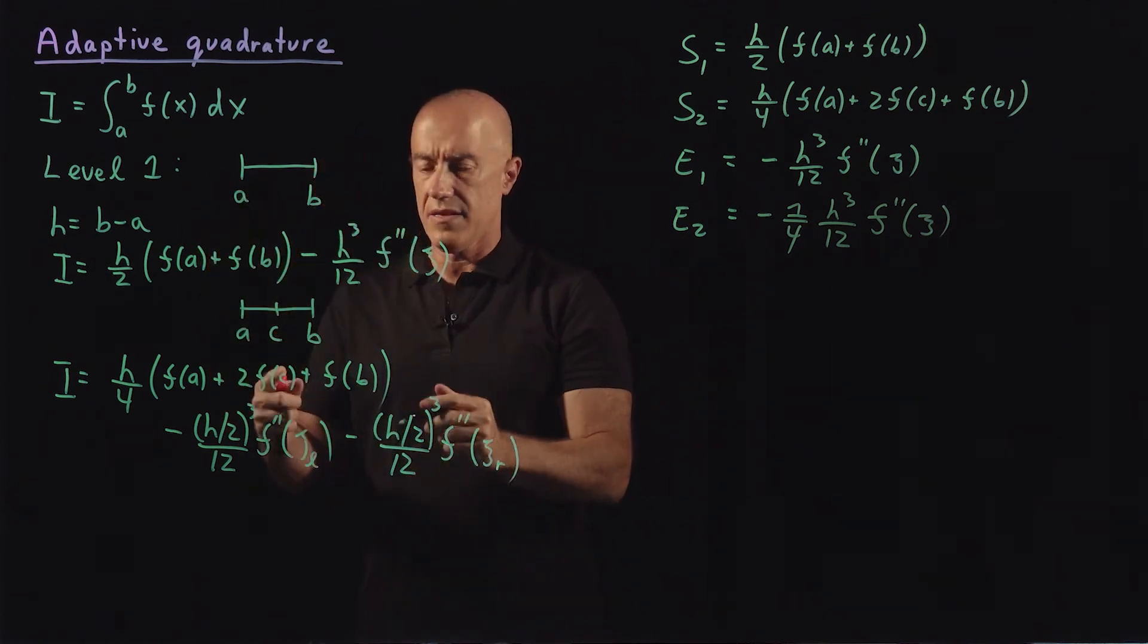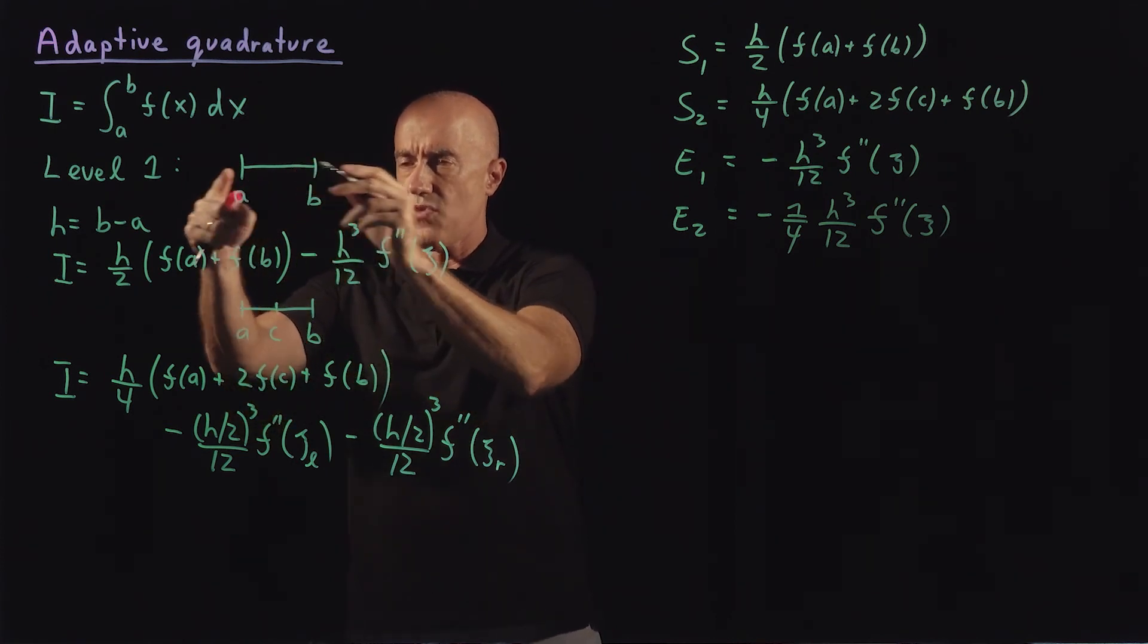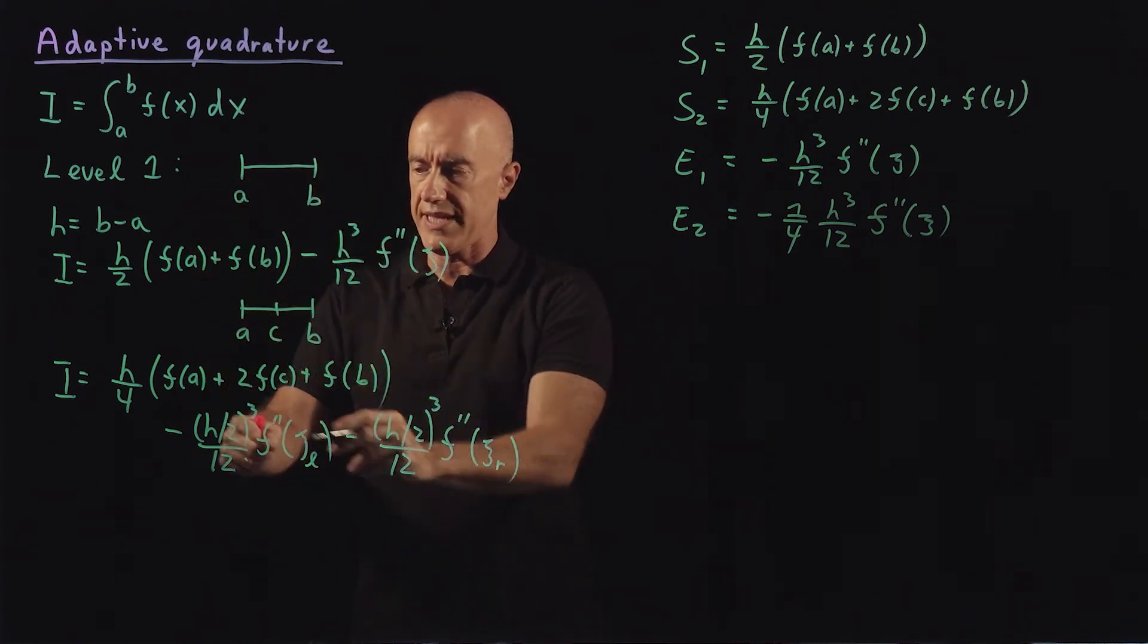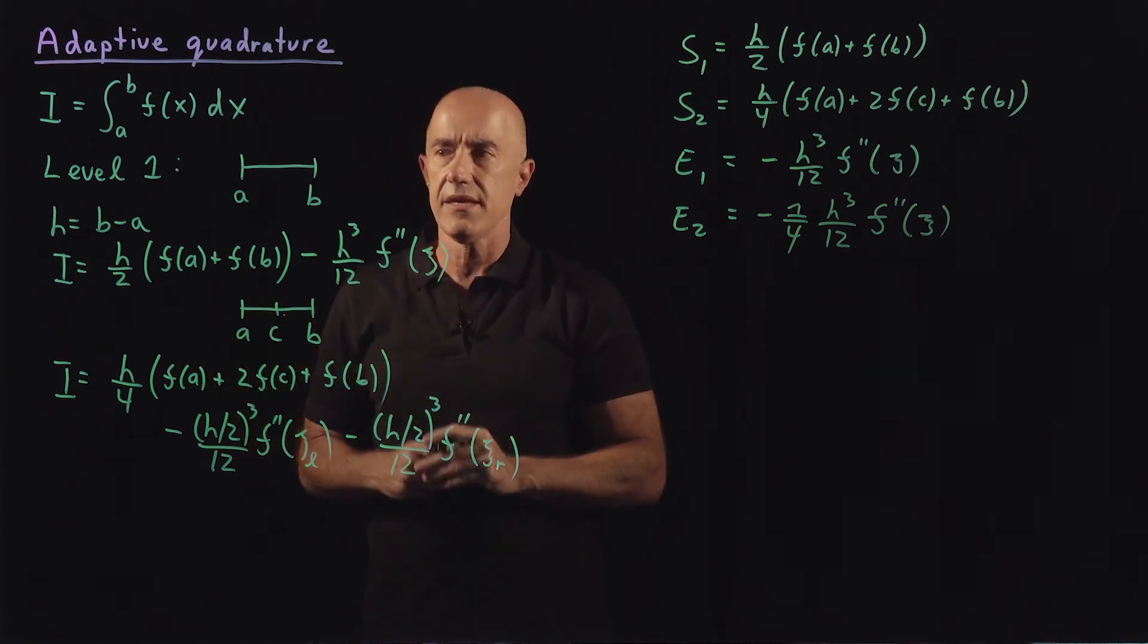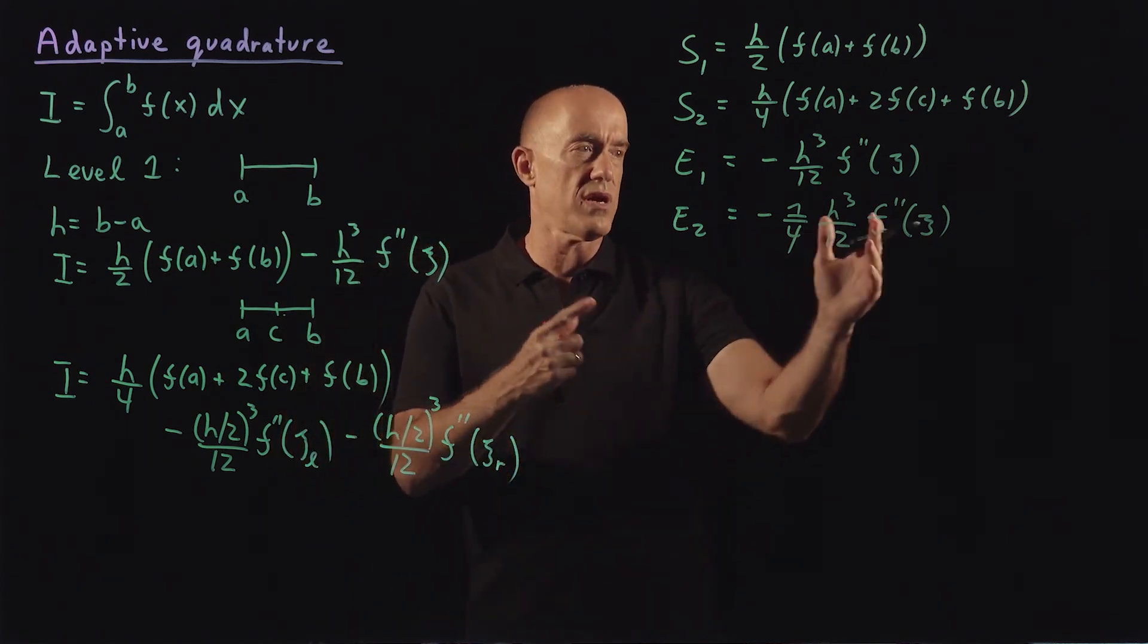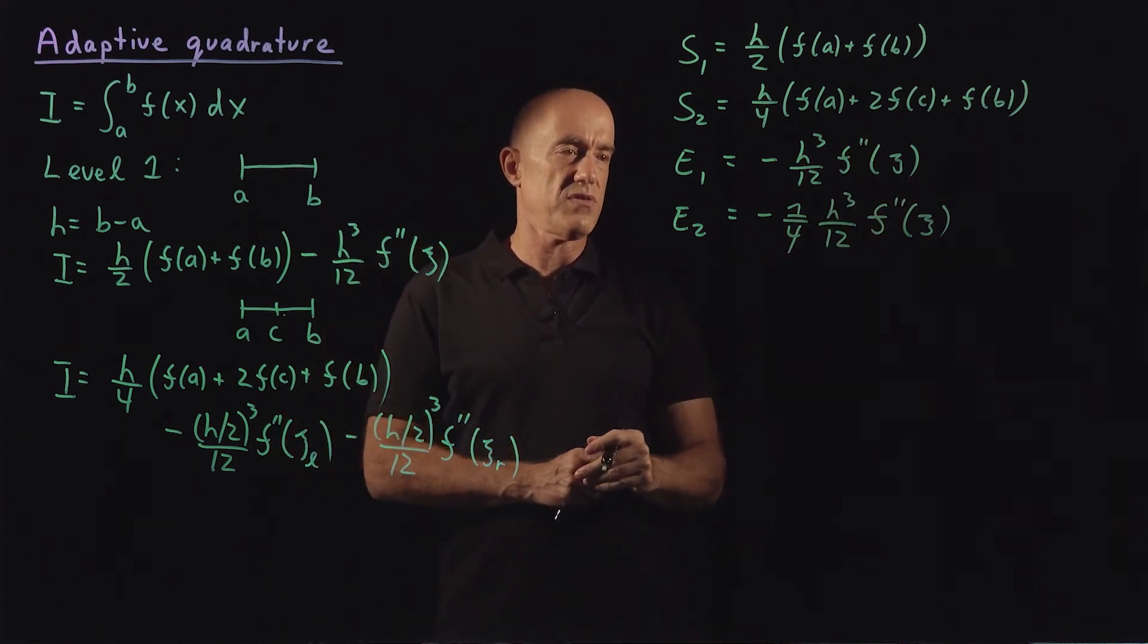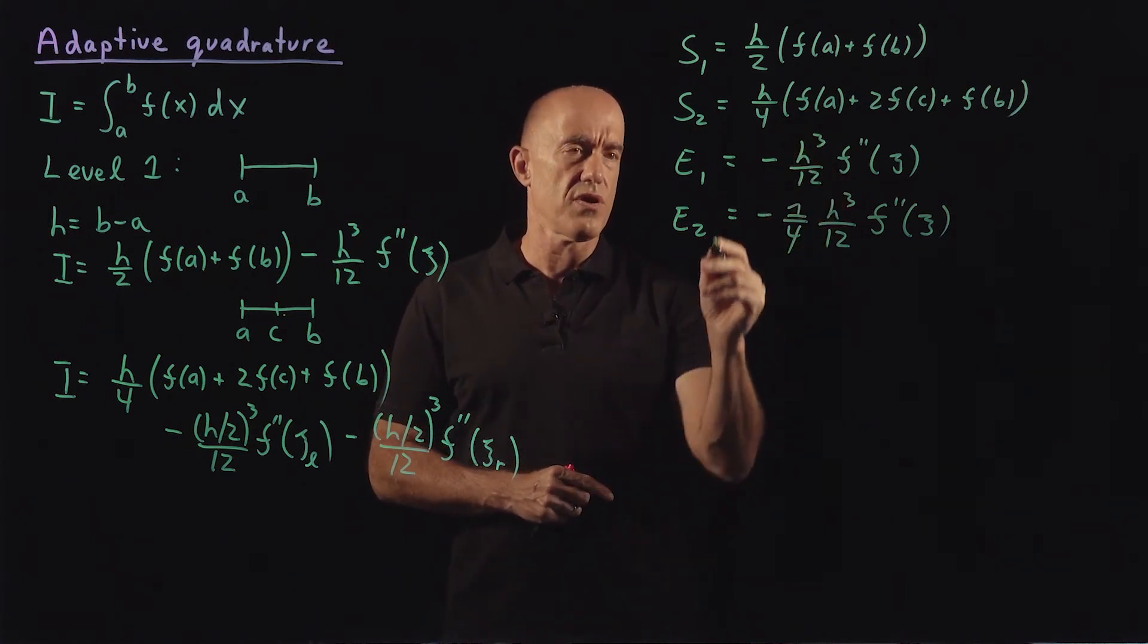So here it's not going to be quite accurate because we have the second derivative somewhere in a, b, and here we have the second derivative somewhere in a, c and somewhere in c, b. But as these intervals get smaller and smaller, this sort of approximation will be okay.